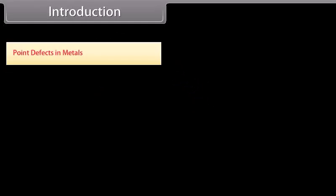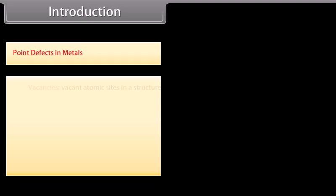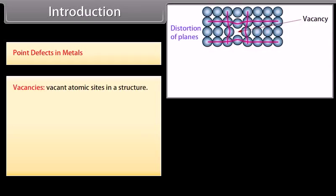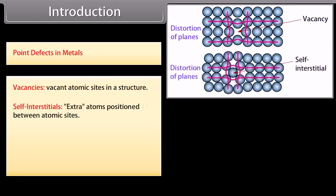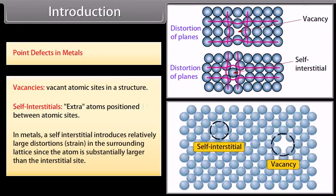Point defects in metals include vacancies, which are vacant atomic sites in a structure, and self-interstitials, which are extra atoms positioned between atomic sites. In metals, a self-interstitial introduces relatively large distortions and strain in the surrounding lattice since the atom is substantially larger than the interstitial site.